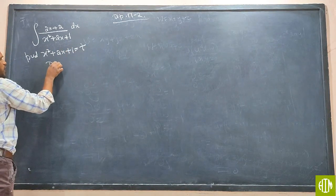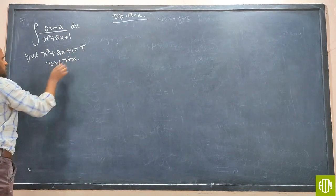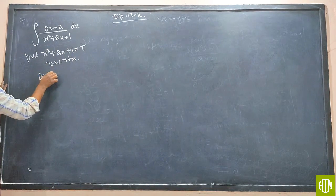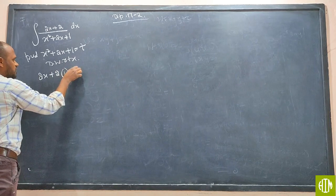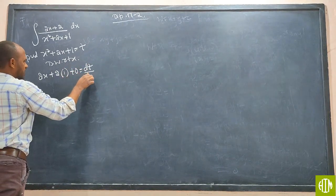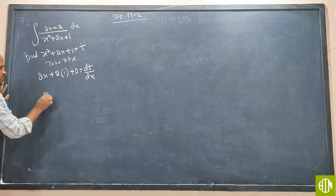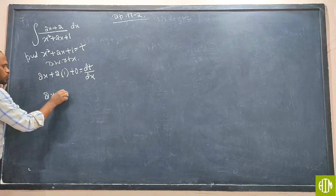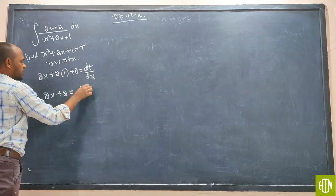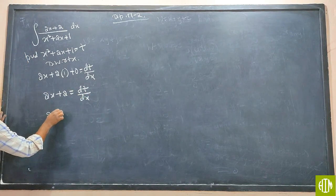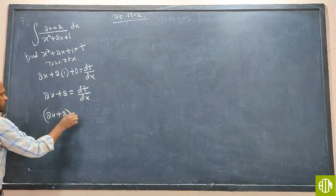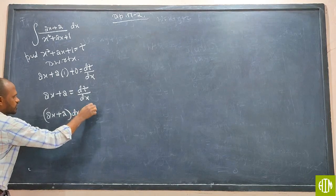Now differentiate with respect to x. X squared, 2x constant outside, x means 1, constant 0, dt by dx. 2x plus 2 is equal to dt by dx. 2x plus 2 dx is equal to dt.